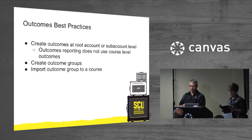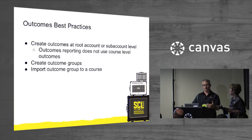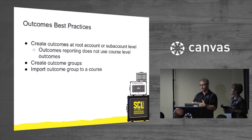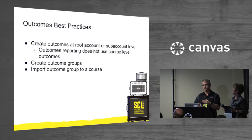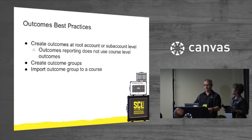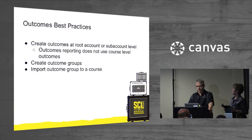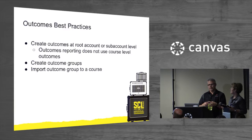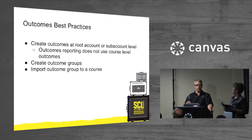A couple of best practices: if you want to use outcomes for reporting at a higher level within your organization, create your outcomes at the root account level or sub-account level, because outcomes reporting doesn't use course-level outcomes in those reports. You can still get mastery information at the course level, but for outcomes reporting create them at the account or sub-account level. It's also useful to create outcome groups so all outcomes that are logically grouped together can be imported all at once into a course.